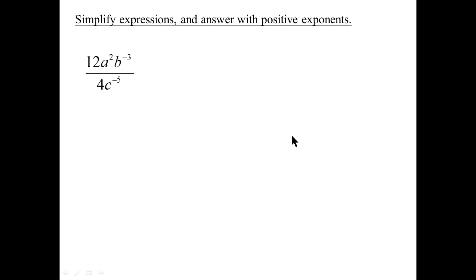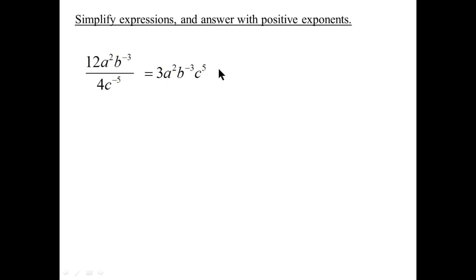Questions can come in many different configurations. Here's one: 12a over four times c to the minus five. Twelve over four is three. C to the minus five is in the denominator with a negative exponent — using the negative exponent principle, c can shift across the fraction line into the numerator, and the minus five becomes positive five. Similarly, b to the minus three shifts across the fraction line into the denominator and becomes positive. Now we have positive exponents. Another example: eight over two is four.